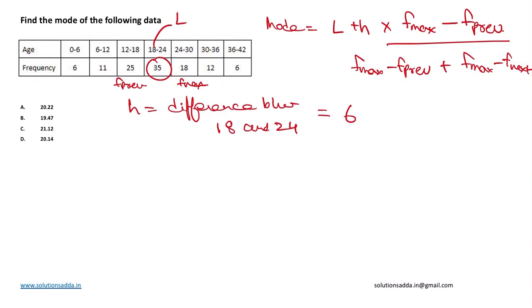Keeping all this in the formula, mode will be 18 plus 6 into 35 minus 25, divided by 35 minus 25 plus 35 minus 18.